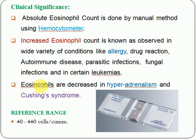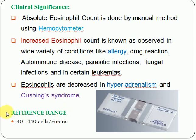Decreased eosinophil count is known as eosinopenia. Eosinopenia is seen in hyperadrenalism and Cushing's syndrome. Hyperadrenalism is a condition where high levels of adrenal hormones are present in the blood. Cushing's syndrome occurs when the body is exposed to high levels of cortisol hormone for a longer duration.